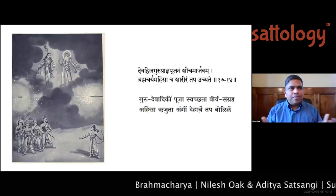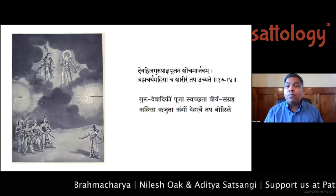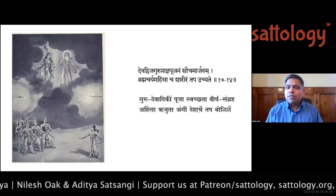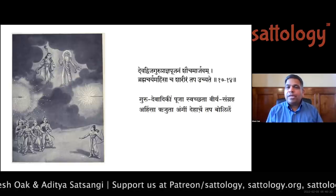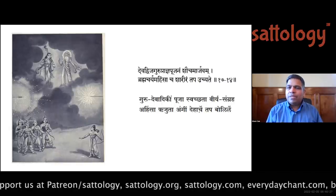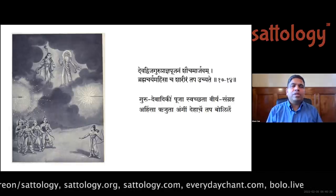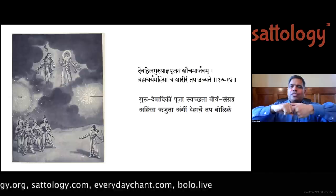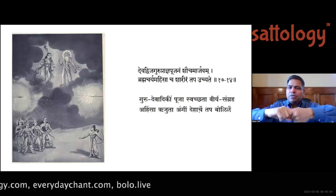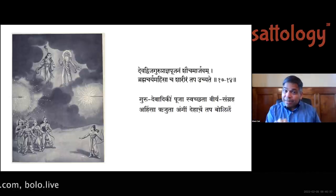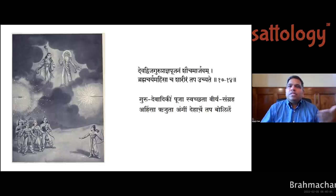Buddha did not dare give this brahmacharya vrata — in the sense of sannyas and celibacy — to ladies, because he was concerned about what it would do to the sangha he wanted to achieve. In that context, great credit goes to Mahavir ji, who thousands of years ago had the daring to give sannyas brahmacharya vrata even to ladies.